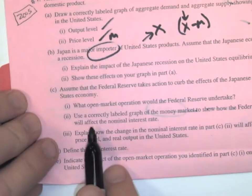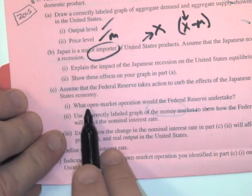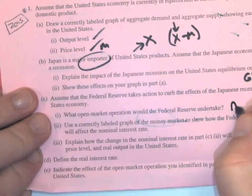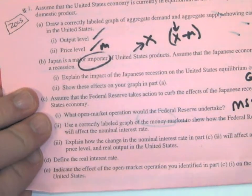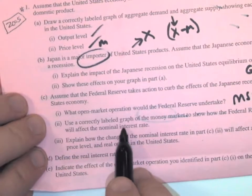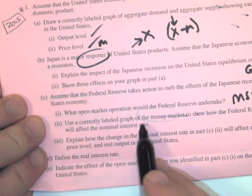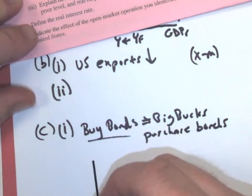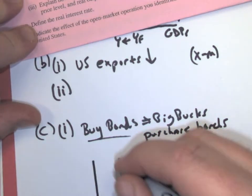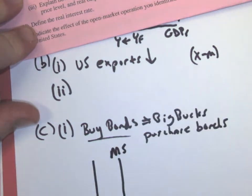Now they want us to draw, so we're going to buy bonds and make big bucks. That means the money supply is going to go up. So big bucks means bigger money supply. Use a correctly labeled graph of the money market to show how the Federal Reserve policy action will affect the nominal interest rate. So they want us to draw. We have a vertical money supply because the Federal Reserve is in charge of it. They have a monopoly over it. So we have our quantity. We have our money.